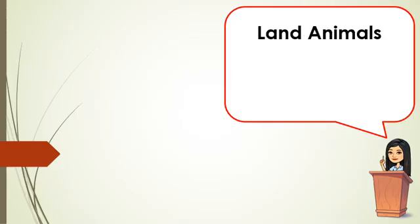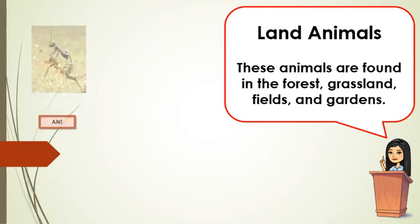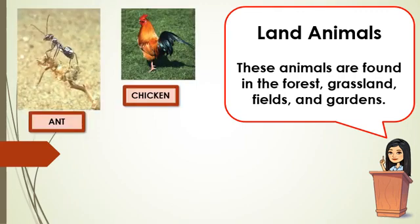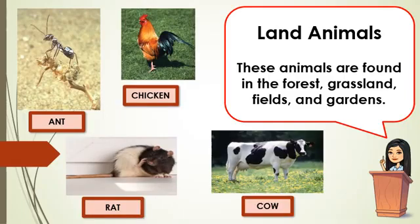Next, we have the land animals. These animals are found in the forest, grassland, fields, and gardens, just like the ant, chicken, rat, and cow. These are called land animals. Now, it's your turn to name some land animals.